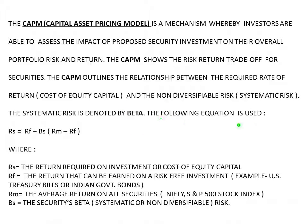The following equation shows the relationship between the return and beta — the relationship between return and risk. The equation is: RS = RF + BS × (RM − RF).